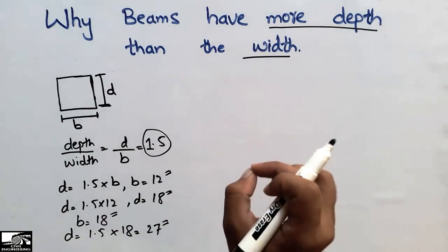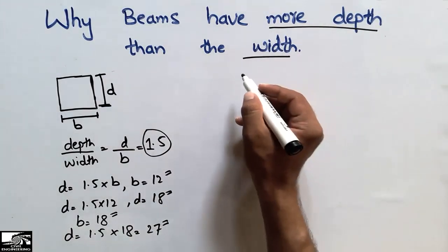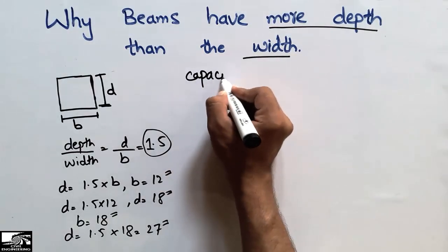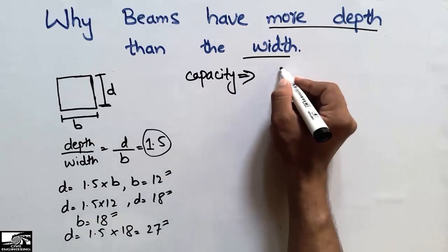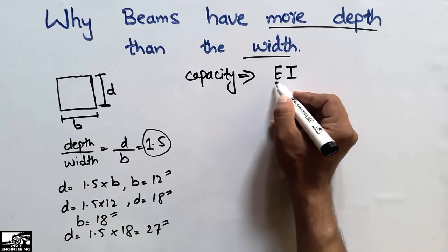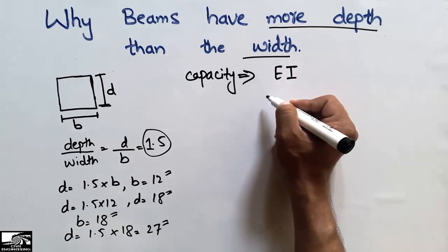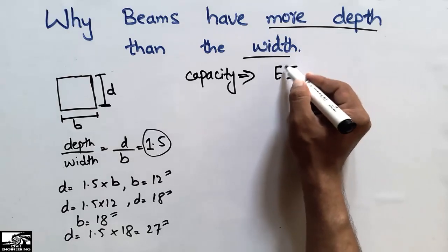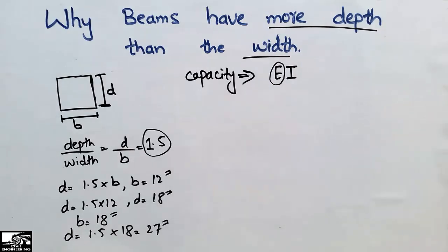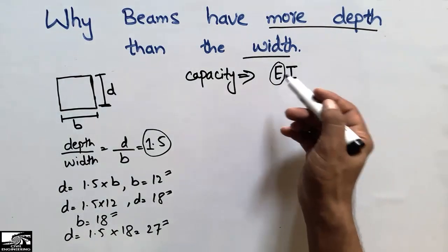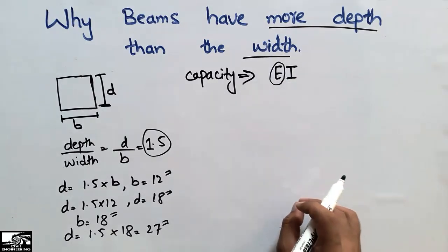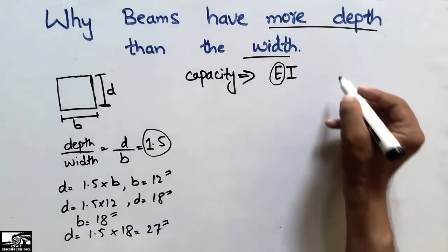But we don't yet know why we have more depth in comparison to width. The reason is that there are two main factors in determining the capacity of any beam. The capacity of the beam is generally taken as EI — E is the modulus of elasticity of the beam material, and I is a geometric property. E is constant for a given beam material; for example, if you are using a reinforced concrete beam, E will be constant. So we should play with the geometric property I, which is the moment of inertia.